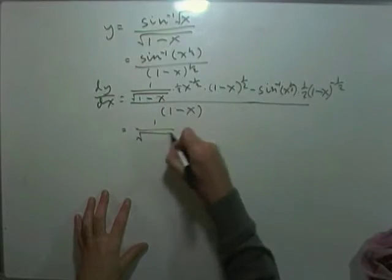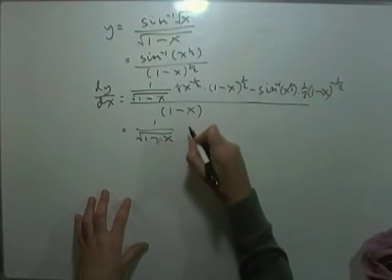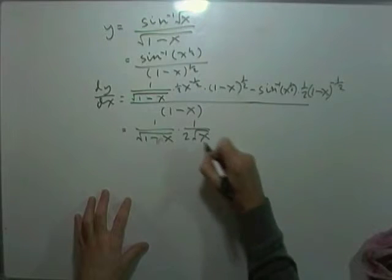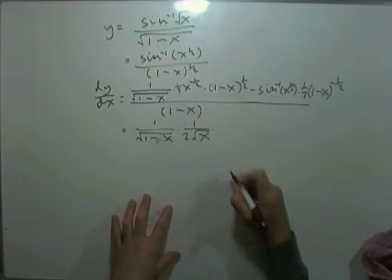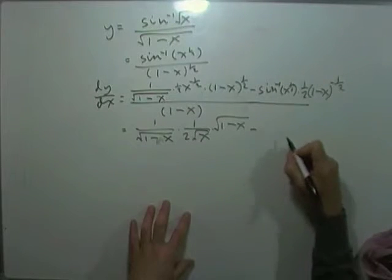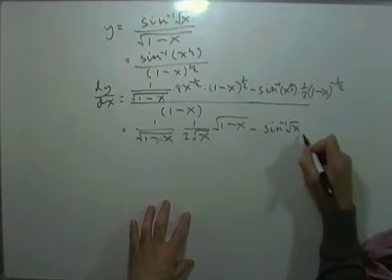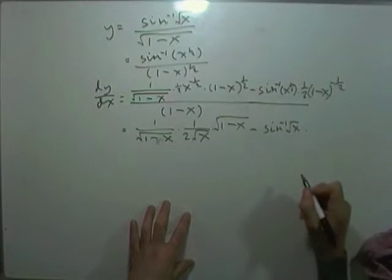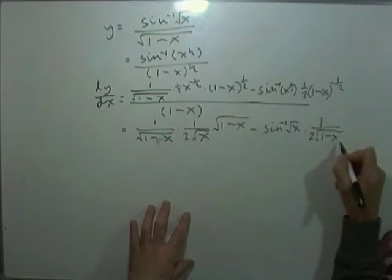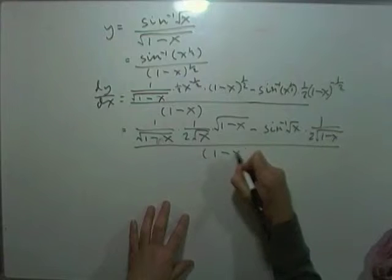I'd have 1 over the square root of 1 minus x. Oh, that's a big subtract. And this part would be times 1 over 2 times the square root of x. times the square root of 1 minus x. Minus inverse sine of the square root of x. Multiplied by 1 over 2 times the square root of 1 minus x. All over 1 minus x.